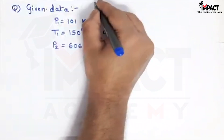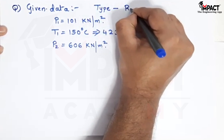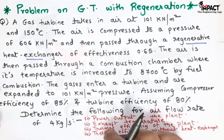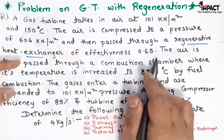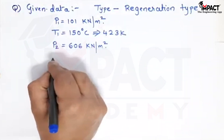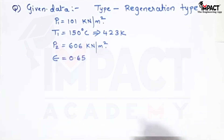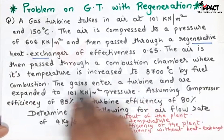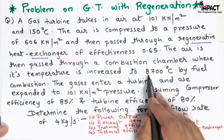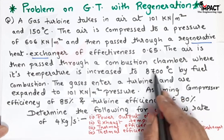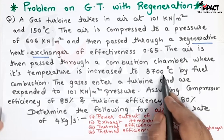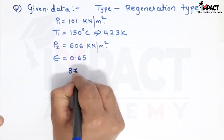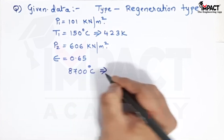Just by reading that it is a regenerative heat exchanger, we can say the problem belongs to the regeneration type — the compressed air is passed through the regenerator. The heat exchanger has effectiveness epsilon of 0.65. The air is then passed through a combustion chamber where its temperature is increased to 870 degree Celsius.